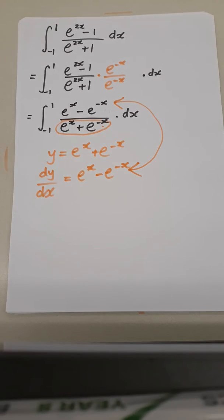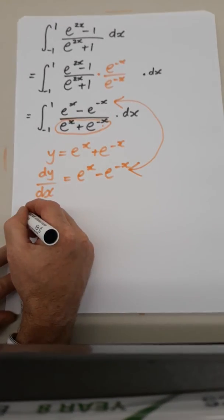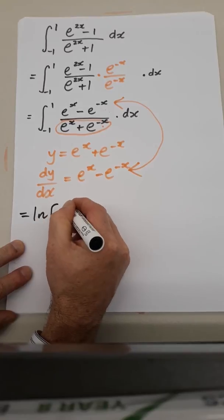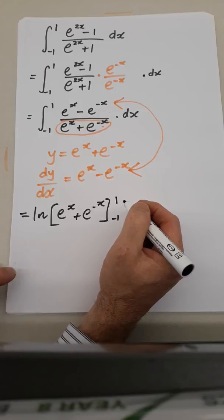And when that happens, woohoo! That means you can write natural log of the denominator. So, what we've just found is natural log of e to the x plus e to the minus x from minus 1 to 1 is what we're finding.